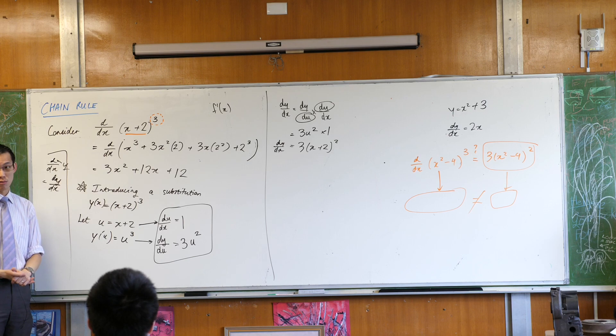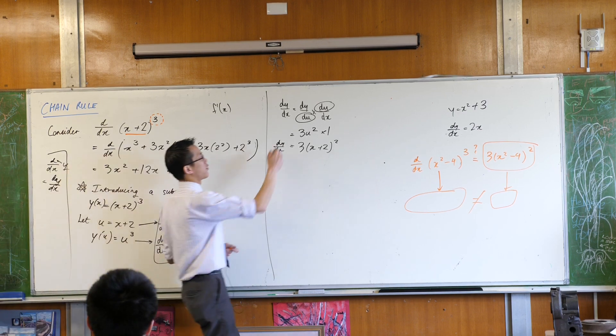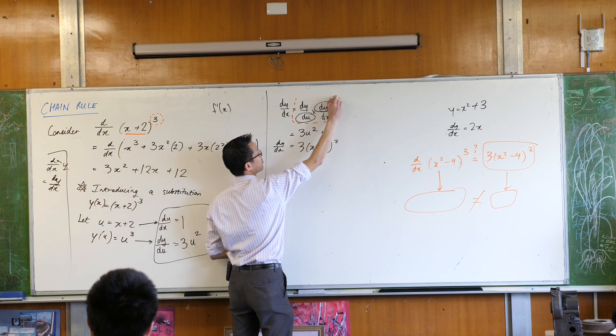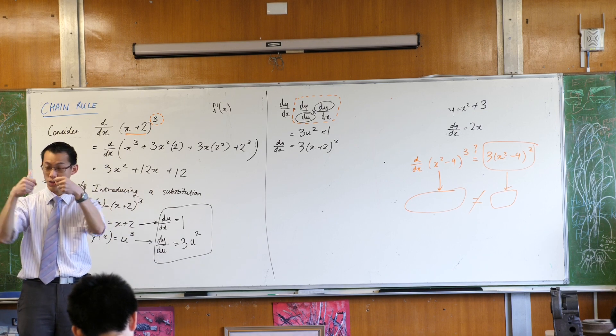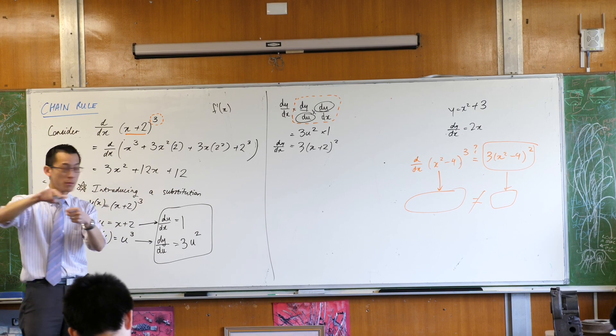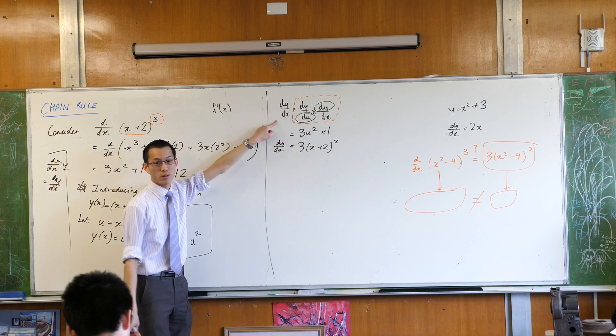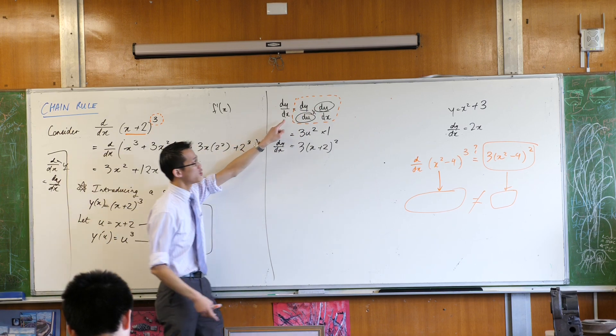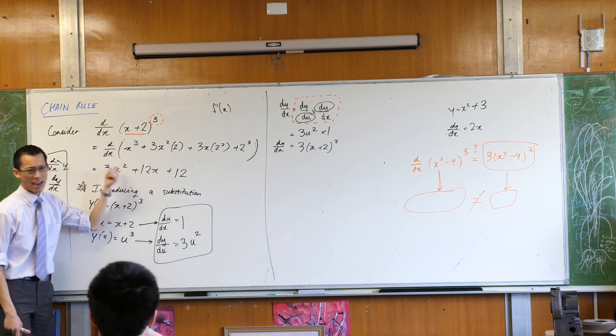So why is it called chain rule? Chain rule is so named because of this step here. There is, as it were, a chain of derivatives that have been sort of stuck together. And if you chain them along in the correct way to get things cancelling, then you get the derivative that you want. So this chain of derivatives gets you to this result, which is much quicker than having to expand.